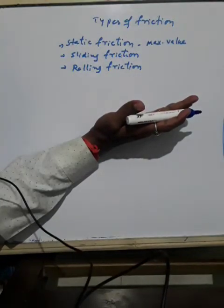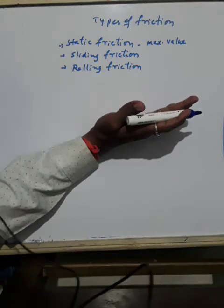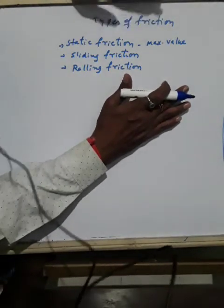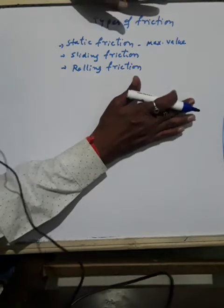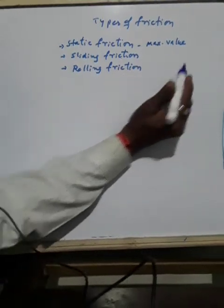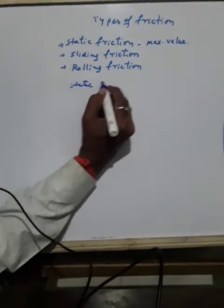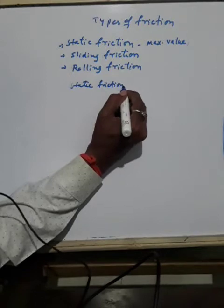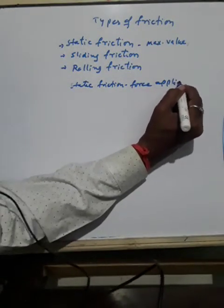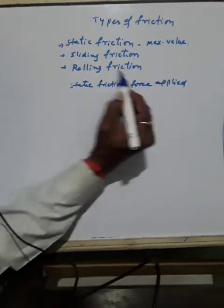For example, static friction prevents a car from sliding down a hill when parked. Suppose there is a hill — when the car is parked, it will not move down because of static friction. Static friction varies based on the force applied. Force applied is one of the quantities on which static friction depends. It depends on the force applied on the object, but it has a maximum value.